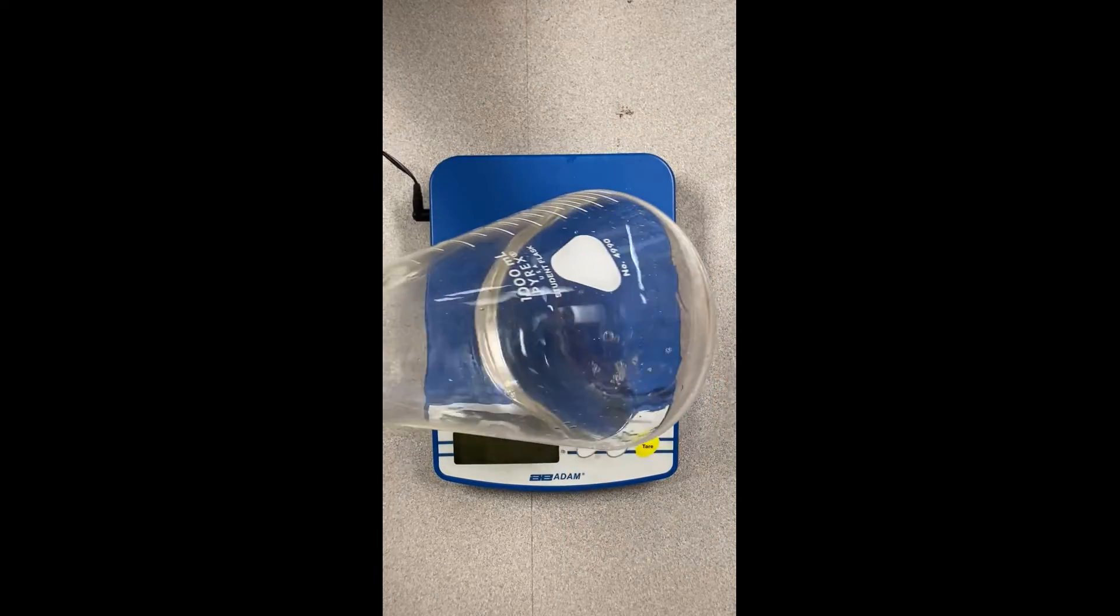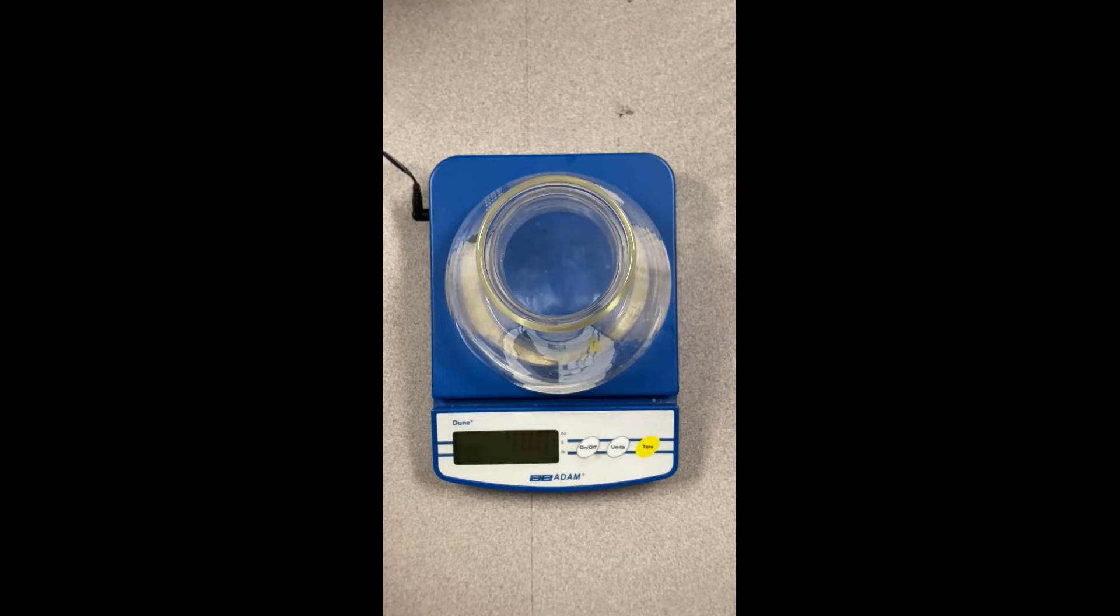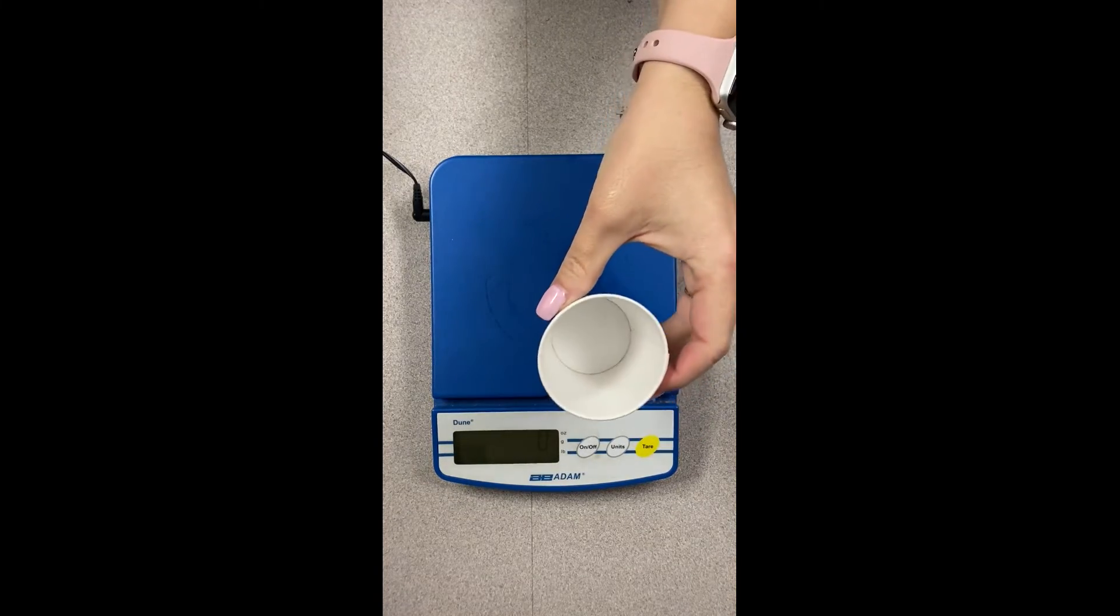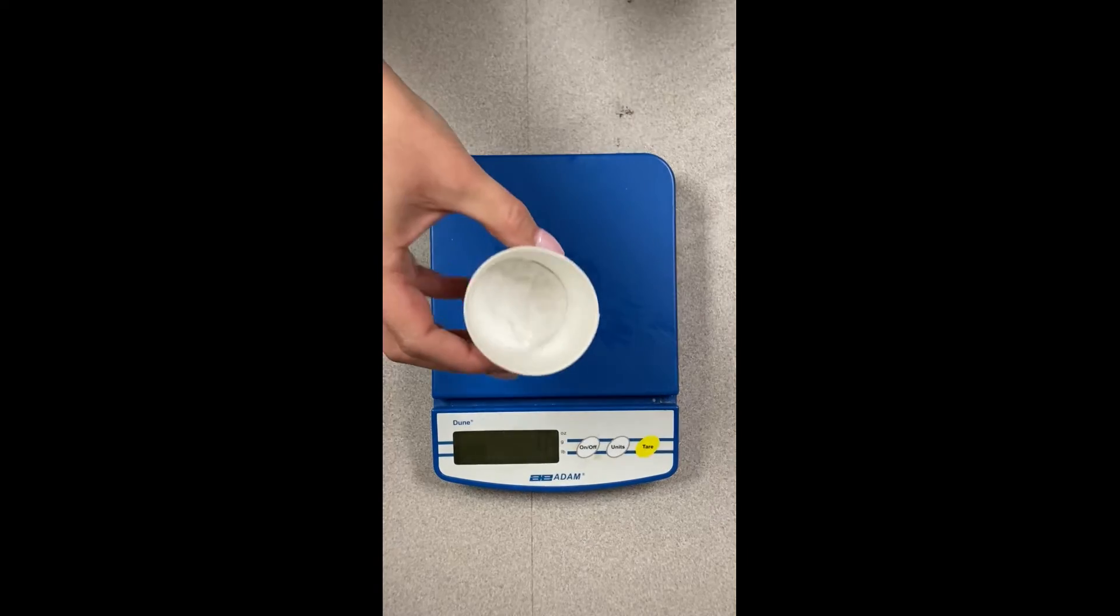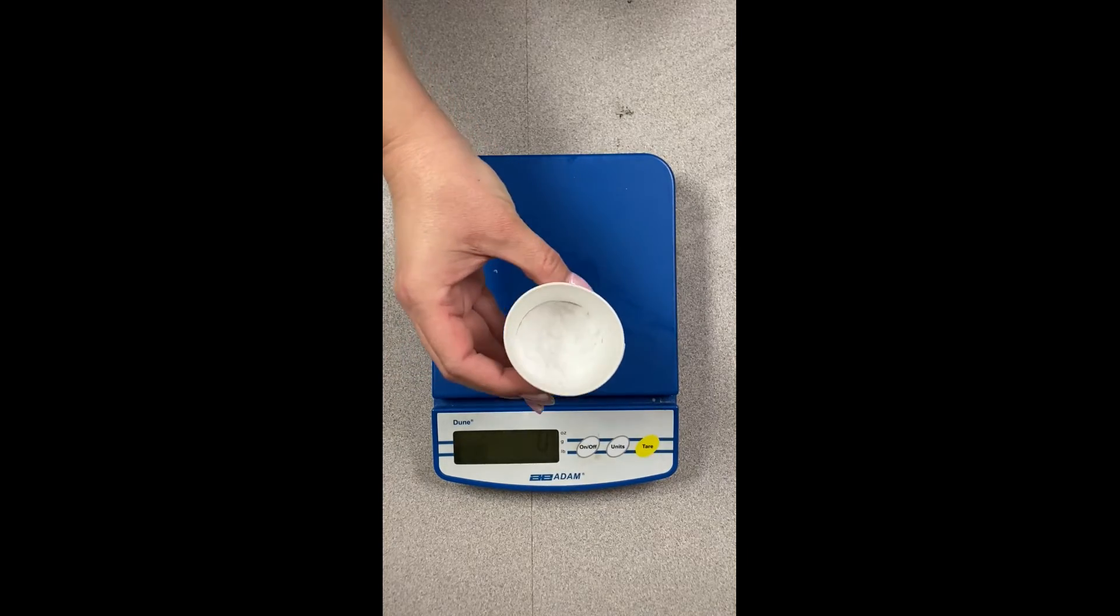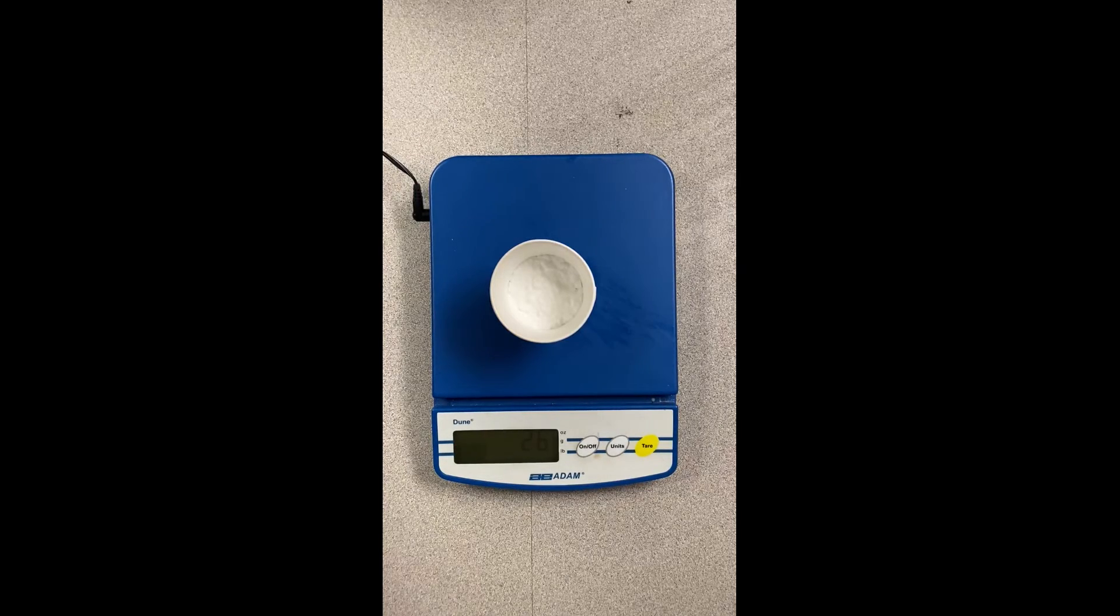All right, we're going to go ahead and start our mass measurements for our flask and vinegar and you can see that comes out to 480 grams. Now we're going to go ahead and measure a cup. This is just an empty cup and that comes to two grams. We're going to go ahead and put baking soda in that cup and take the measurement of mass again and you can see that is 26 grams.